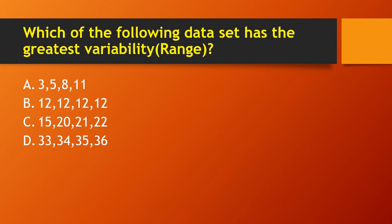Next question: which of the following data sets has the greatest variability (range)? Option A: 3, 5, 8, 11 — range = 11−3 = 8. Option B: all 12s — range = 0. Option C: 15, 20, 21, 22 — range = 22−15 = 7. Option D: 33, 34, 35, 36 — range = 36−33 = 3. The right answer is option A with range 8, giving the greatest variability.